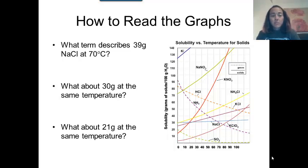Let's do some example problems. In this first question, what term describes 39 grams of sodium chloride dissolved in water at 70 degrees? So what you're going to need to do is find 70 degrees on the x-axis of the graph and read up to the blue sodium chloride line. Now when we get to that point, it seems to be about 30 grams on the y-axis as my solubility reading.